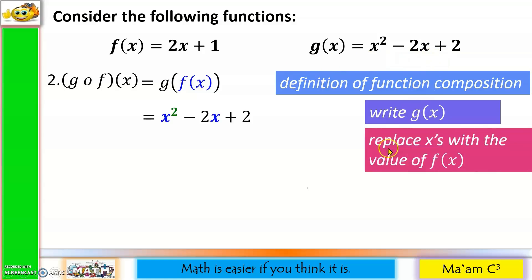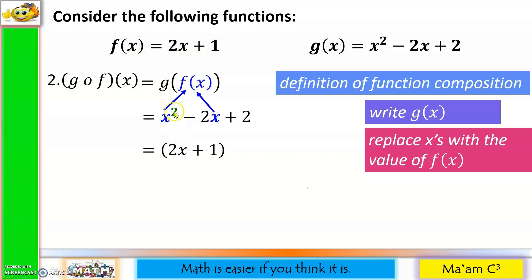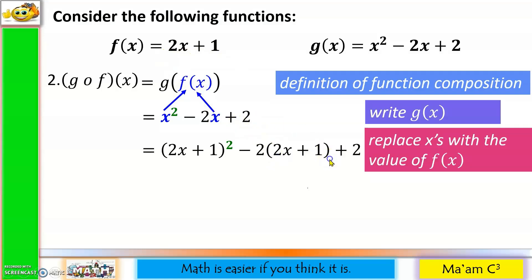Third step: replace x with the value of f(x). Let us replace x with f(x). Our f(x) is equal to 2x plus 1. So this will become (2x plus 1) squared minus 2 times (2x plus 1), plus 2.